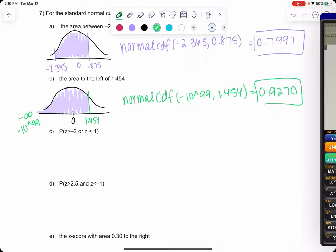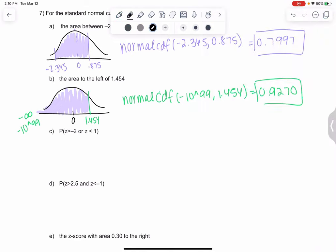For ORs and ANDs, the picture is really important because sometimes there might be no overlap or a lot of overlap. It's really important to sketch the curve to check what's going on. We're going to say greater than negative 2.